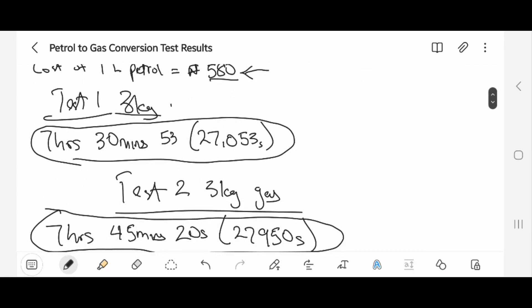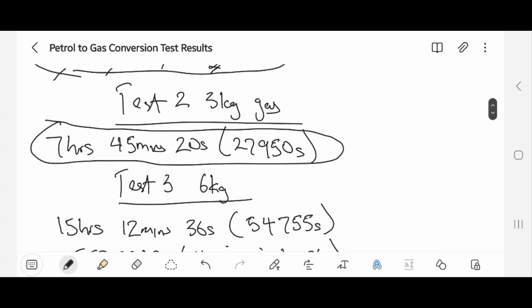For Test 1, I got 7 hours 30 minutes 53 seconds. Converting all to seconds, we have 27,953 seconds. For Test 2, I also used 3kg gas. I got 7 hours 45 minutes 20 seconds. Converting all to seconds as well, I have 27,950 seconds.